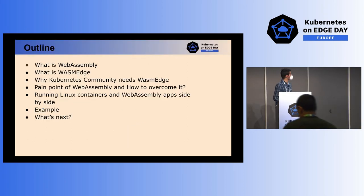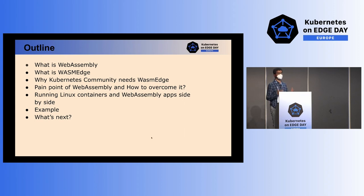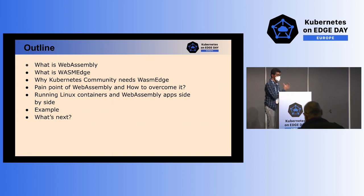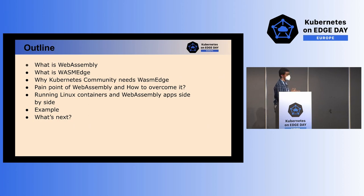First of all, just a very quick rundown on what we're going to be covering. In the outline, we are going to cover what is WebAssembly, we'll be talking about the WasmEdge project, why the Kubernetes community actually needs WasmEdge, what are some of the limitations that come with WebAssembly and how we can overcome that using Kubernetes, some examples of how you can actually run WebAssembly applications on Kubernetes, and what's next for the future of running WebAssembly applications with Kubernetes.